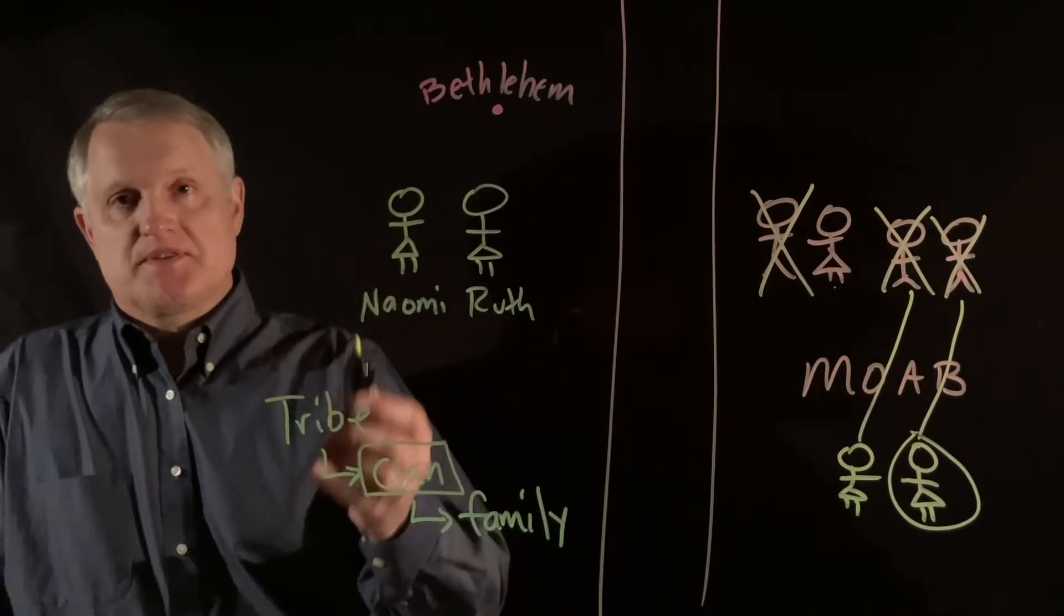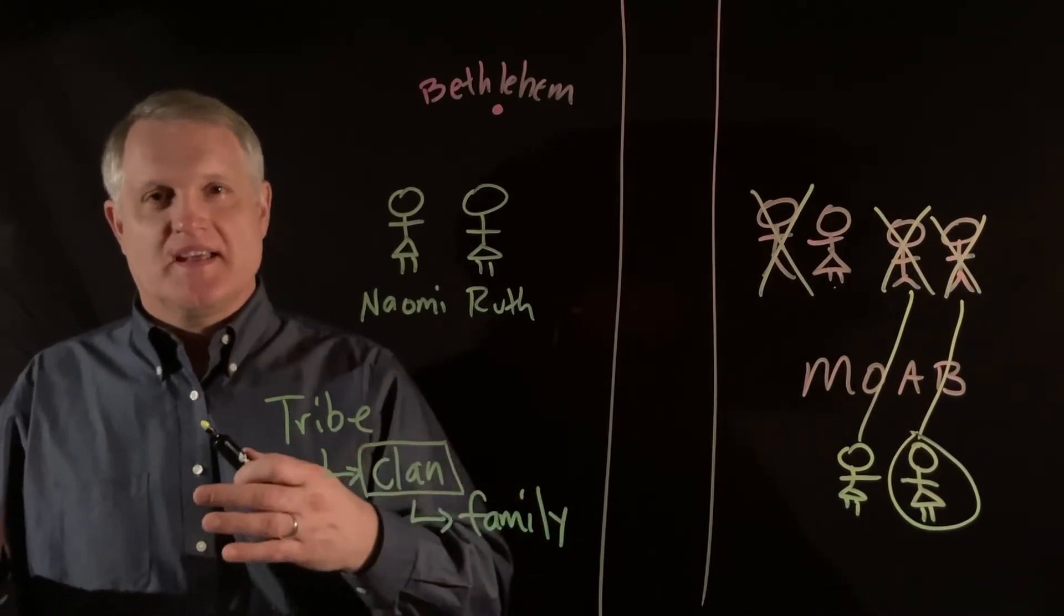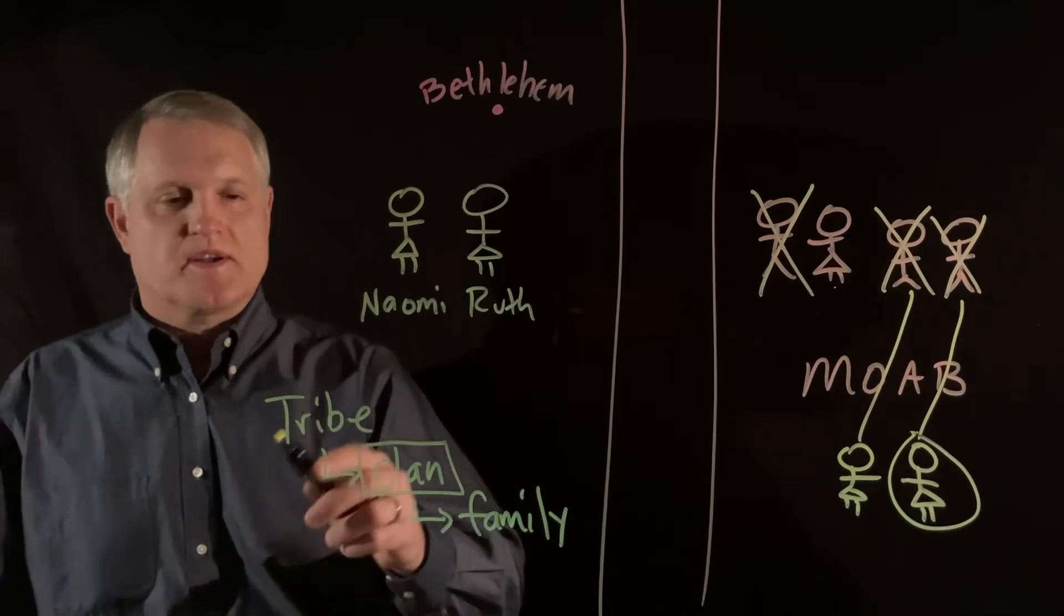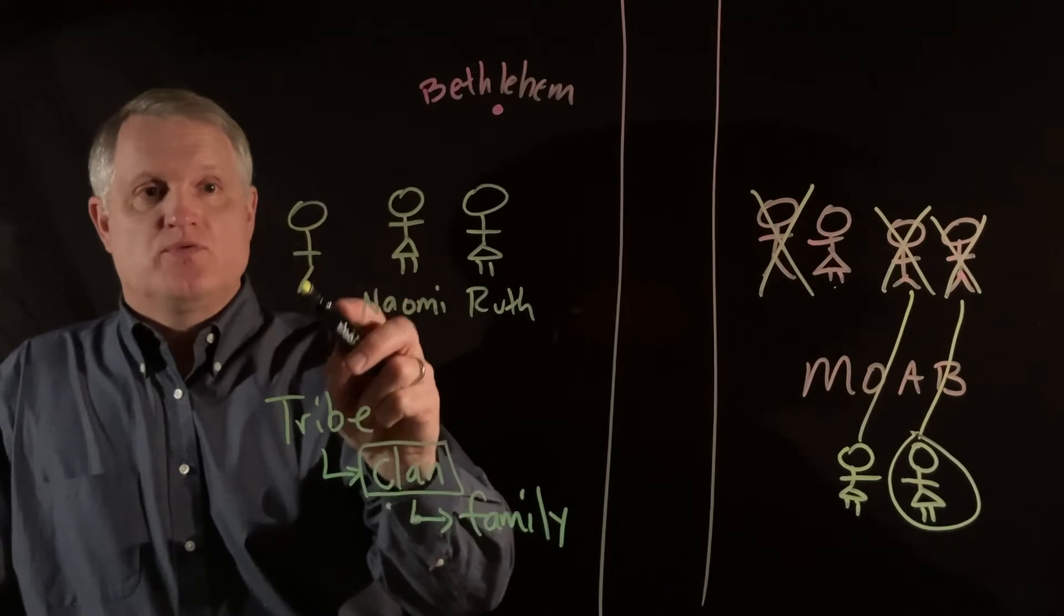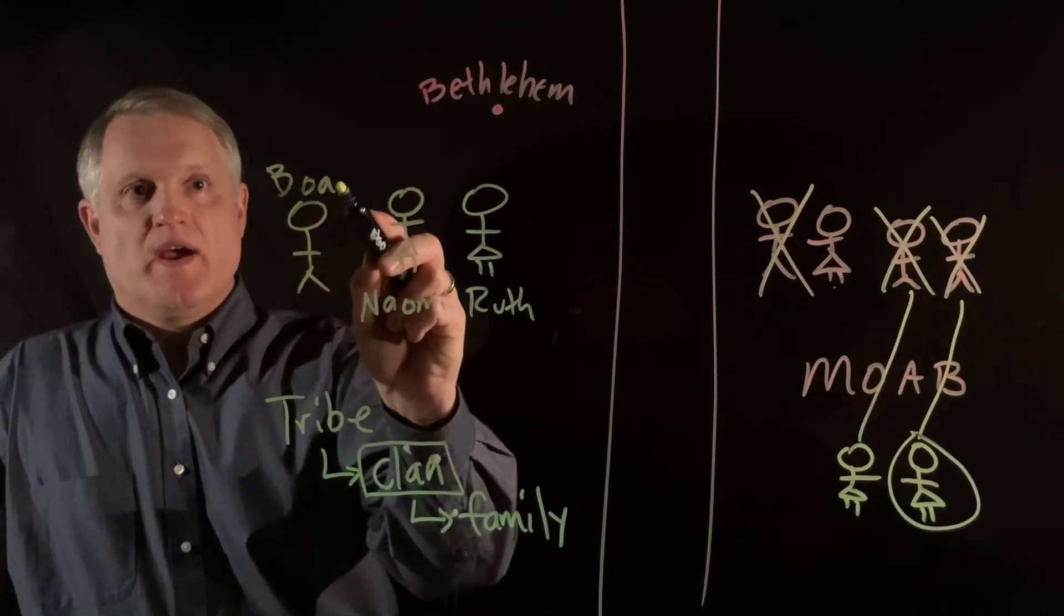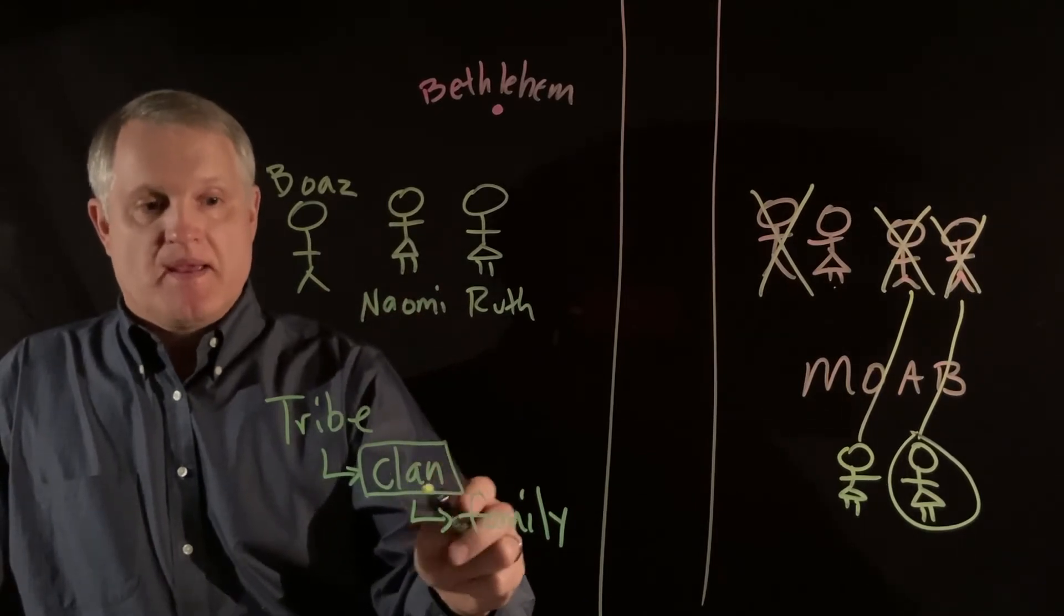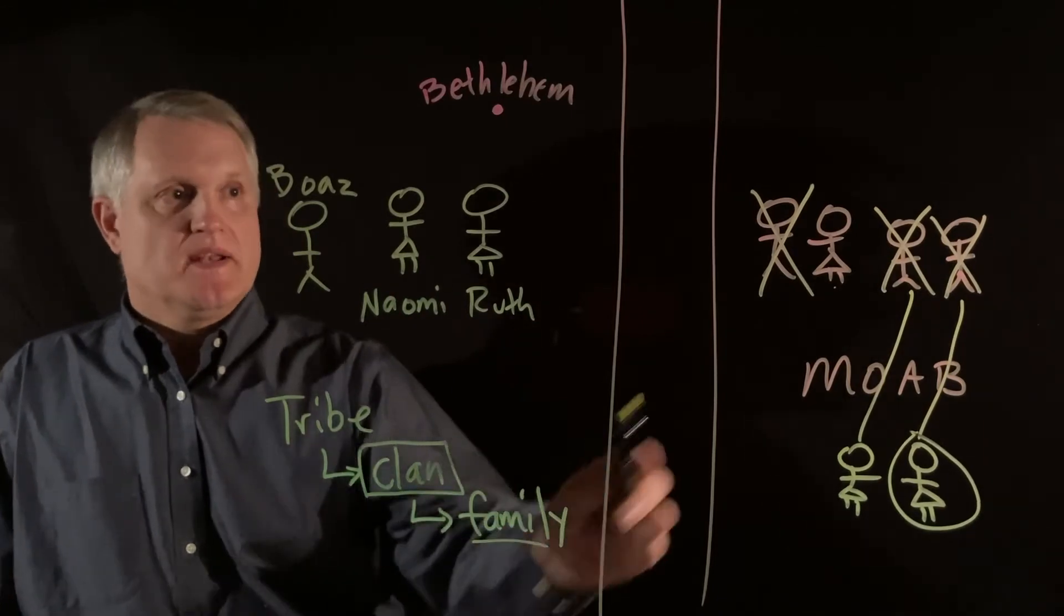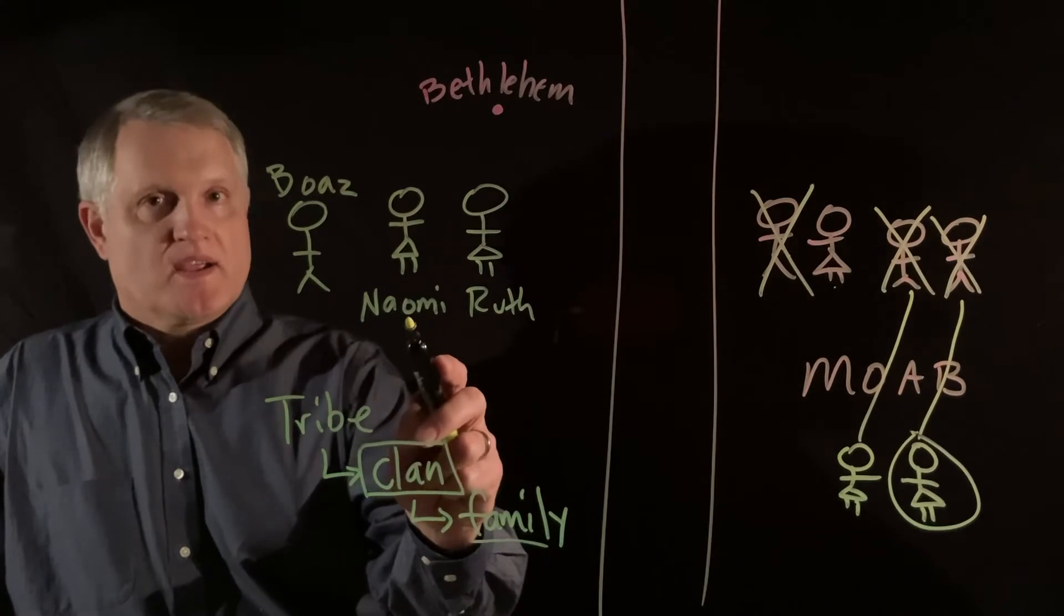And what happens is, in 2-3, it says, she chanced her chance. Well, that idea is meaning kind of behind the scenes that God is at work. And Ruth goes to glean in the field of a man who just happens to be well-off. His name is Boaz. He actually is a clansman, a member of the clan of the family of Elimelech. That was the gentleman that died over here.